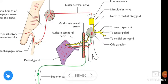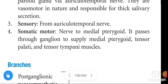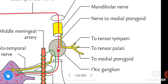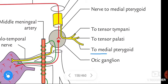Sensory connections of the otic ganglion: from the auriculotemporal nerve. Somatic motor connections of the otic ganglion: nerve to medial pterygoid. It passes through the ganglion to supply the medial pterygoid, tensor palati, and tensor tympani muscles.